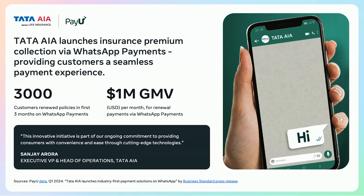In a very different business segment — insurance — Tata AIA has also achieved success by adopting WhatsApp payments for their insurance premium collection. In the initial three months, they were able to remind more than 3,000 customers to renew their policies within WhatsApp, worth 1 million USD GMV. Compared to Metro tickets, insurance has a much higher average ticket size and a very different user journey to collect payments. Our unified checkout user journey has shown its flexibility across diverse types of merchants to optimize for payment success and conversion.